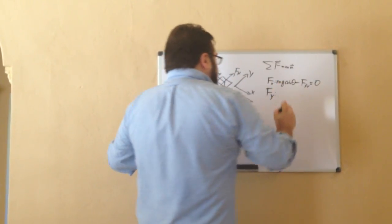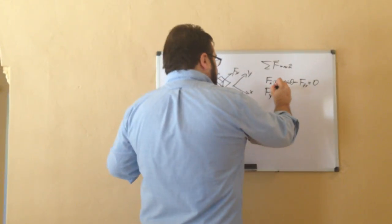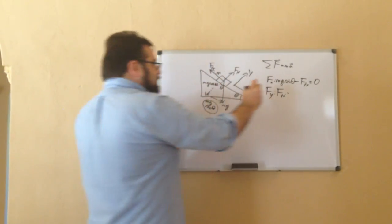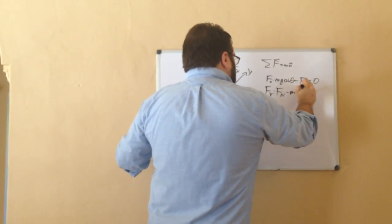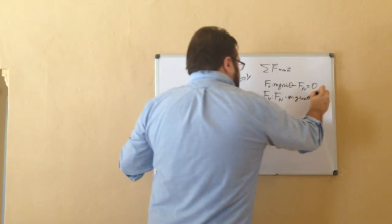In the y direction, I have the normal force of the incline pushing up, and I have this component of gravity, mg cosine theta, going down. And along the y direction, there's also no acceleration, so it's equal to zero.